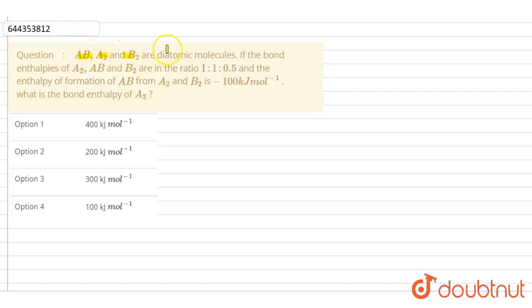A2 and B2 are diatomic molecules. If bond enthalpy of A2, AB, and B2 are in ratio 1:1:0.5, and the enthalpy of formation of AB from A2 and B2 is -100 kilojoules per mole, what is the bond enthalpy of A2? We are given four options: first is 400, second is 200, third is 300, and fourth is 100 kilojoules per mole.